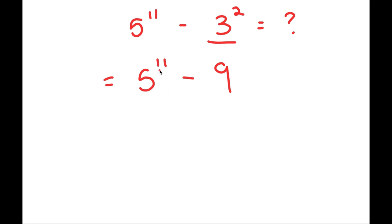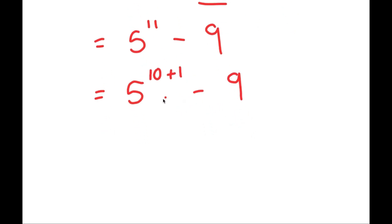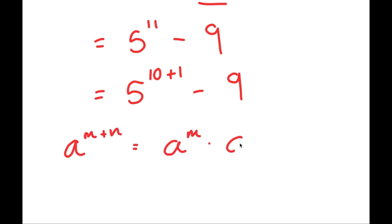Now, from here, I'm going to write 5 to the power of 11 as 5 to the power of 10 plus 1. This way I can use the property that a to the power of m plus n equals a to the power of m times a to the power of n. So now this turns into 5 to the power of 10 times 5 to the power of 1, minus 9.